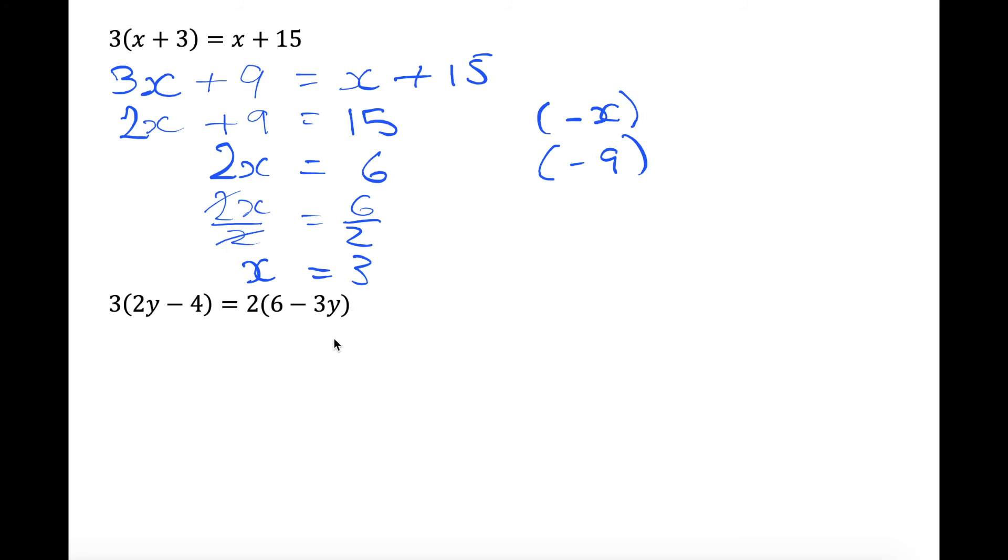And I would say still watch if you did get it right. So let's expand our brackets first. This one was a bit longer because you had brackets on both sides, but it's still the same thing. So we're going to expand. 3 times 2y gives 6y. 3 times minus 4 is minus 12. This equals 2 times 6 is 12 minus 6y.